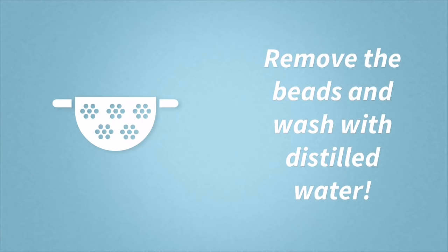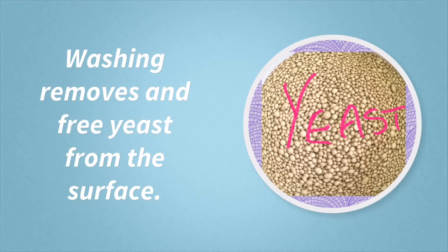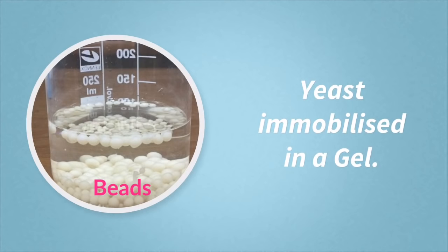The beads were removed from the calcium chloride solution and washed with distilled water. Washing with distilled water removes any possible free yeast that might be on the outside of the beads. So that was how we immobilized our yeast cells in a gel.